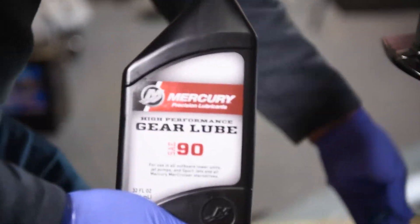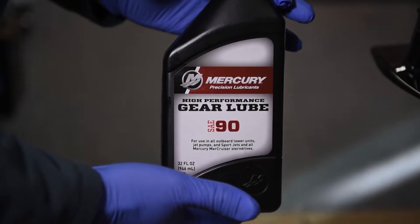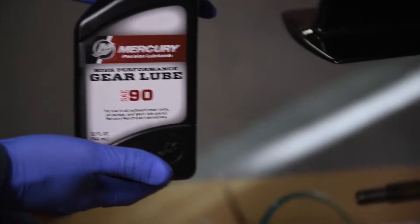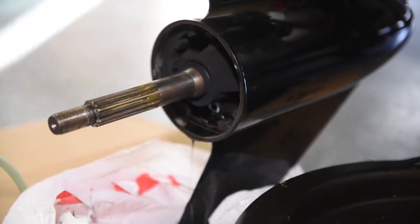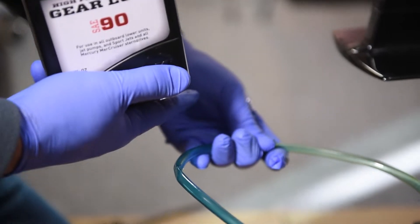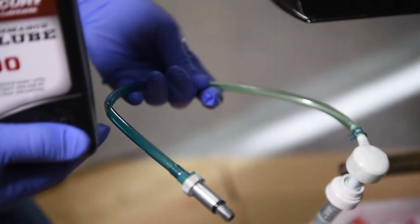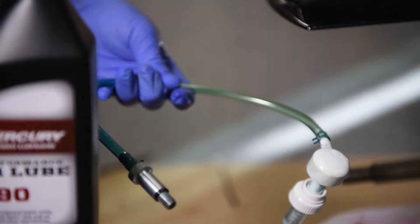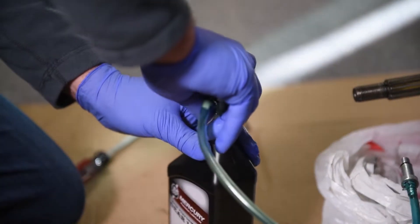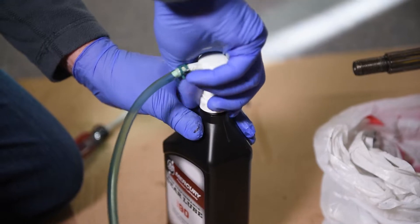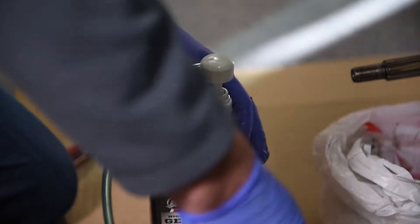All right guys, we've let this drain now for about an hour. It took a little bit longer because it's cold. So we're going to take our gear lube now and open that up. We're going to put our hand pump on there, screw that into the drain plug, and start pumping this in. So we'll go ahead and get that set up. The pump just goes into the bottle, screws on the top, and then the other end screws into the drain plug.